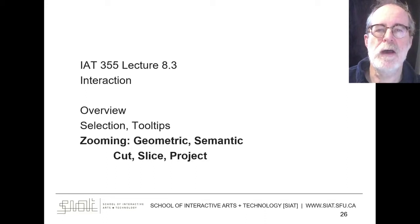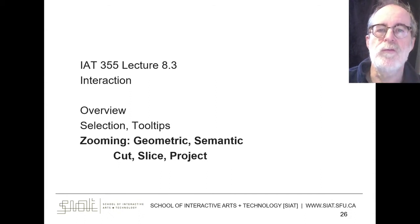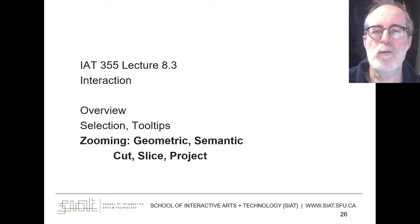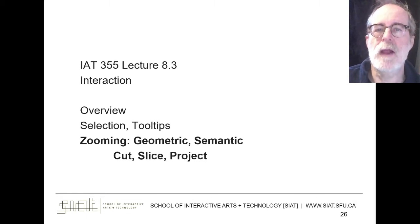This is IAT 355 Visual Analytics lecture 8.3, continuing our conversation about interaction. In this segment we'll be talking about zooming, geometric and semantic zooming, as well as cut, slice, and project as mechanisms for dealing with perhaps too much data. These build on previous topics of having an overview and ideas about how to organize interactive activities for visual analytics data, as well as using selection to identify and interact with pieces of data directly.